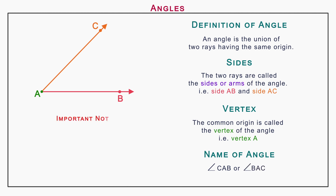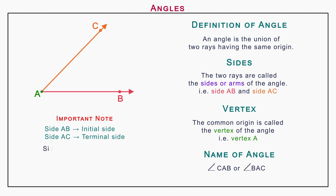Here we have an important note regarding the sides of the angle. We can take any side as an initial side and then the other side is the terminal side. For example, if side AB is taken as an initial side, then side AC is the terminal side; or if side AC is taken as an initial side, then side AB is the terminal side.